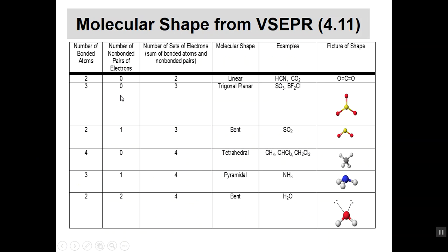Here's a summary table. The left column shows the number of bonded atoms. In examples like HCN and CO2, there's a central atom with two atoms bonded to it. In SO3 and similar molecules, a central atom is bonded to three atoms on the outside. Some molecules have two bonded atoms plus a lone pair of electrons, and some have four atoms bonded to the central atom. These columns tell us about those arrangements.